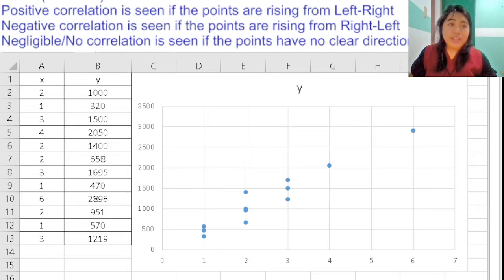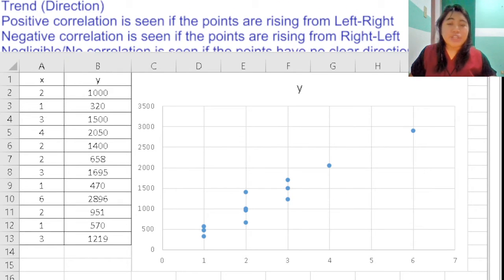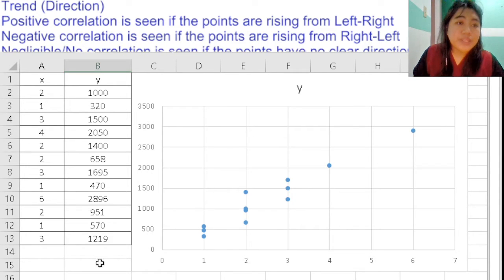Trend can also be considered direction. Through the direction shown in the points in the scatterplot, we can assume if there is positive, negative, or no correlation between our variables x and y. When there is a rise of the points going from left to right, this shows positive correlation between x and y. As x rises, so does y.